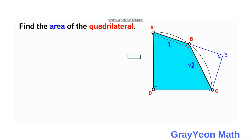Since BE is a right triangle, this triangle BEC will be an isosceles right triangle. So length BE equals 1 and length CE also equals 1.